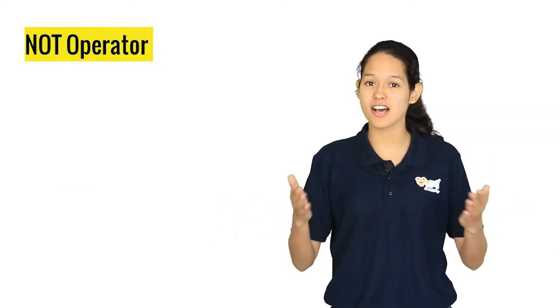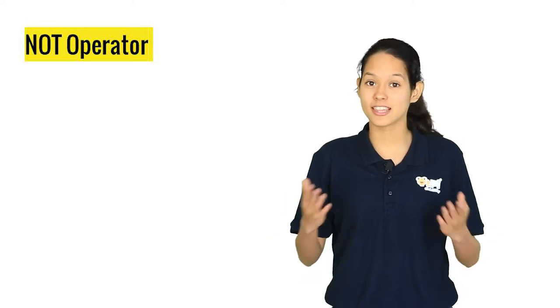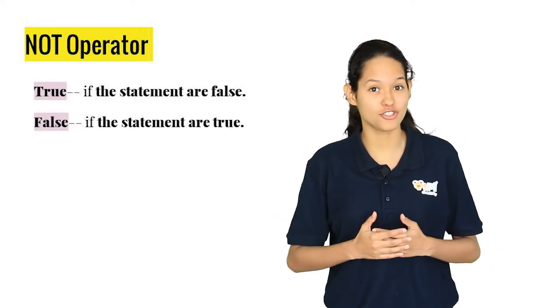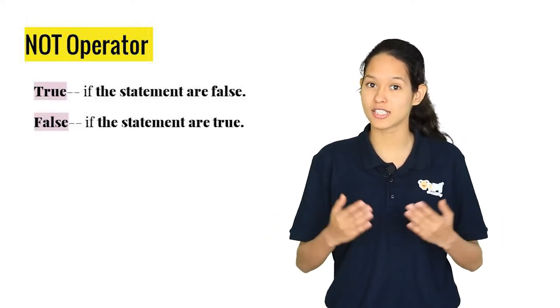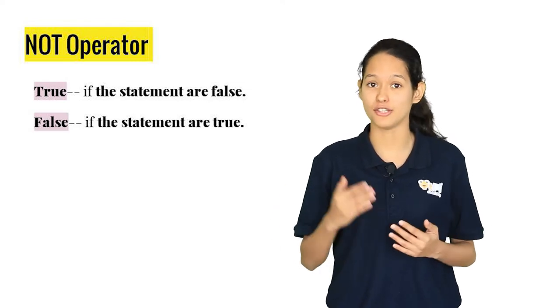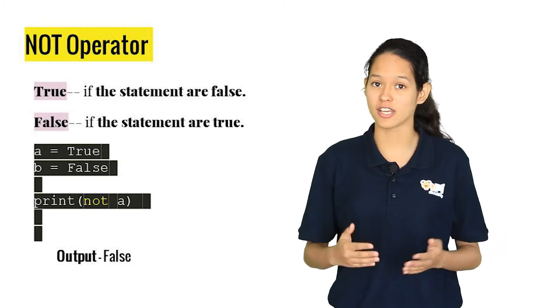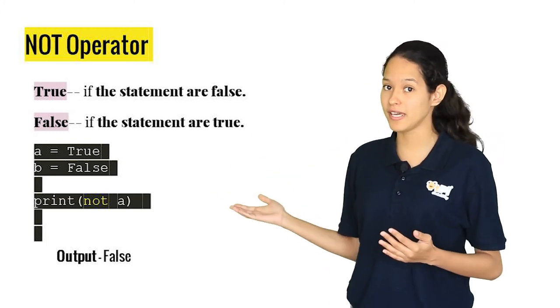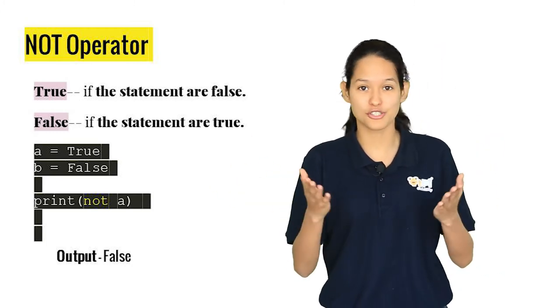Let's take a look at the last logical operator, the NOT operator. In this operator, it checks the condition if it is true and returns the value false. If the condition is false, it returns the value true. You can try changing the NOT A or NOT B and see what outputs you receive.